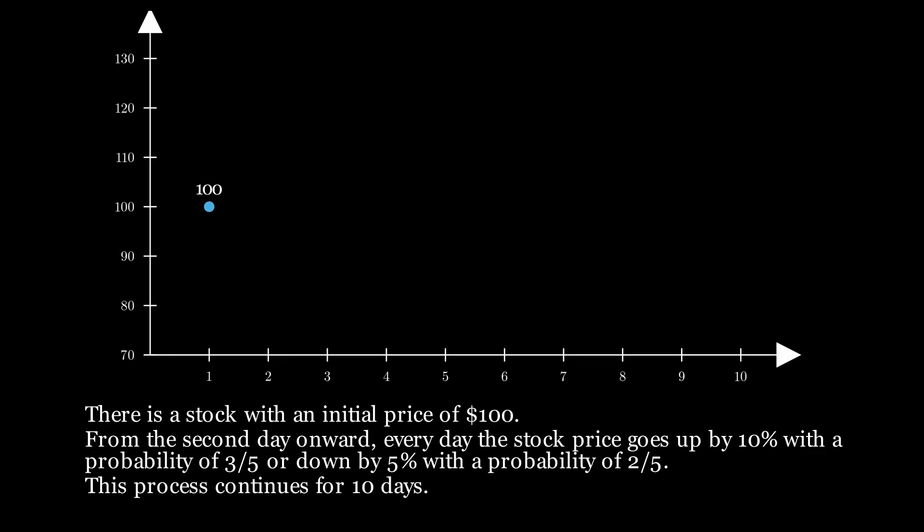For example, one possible behavior of the stock is this. Since the stock price fluctuates randomly, the final price at the end of day 10 will vary. So what is the expected stock price at the end of the 10 days? Pause the video here if you want to give it a try.